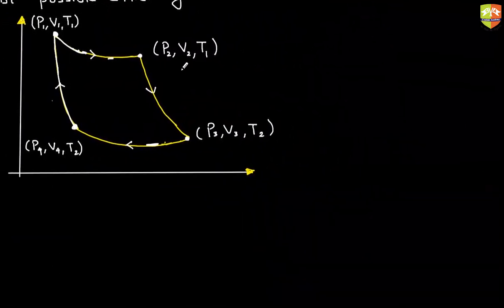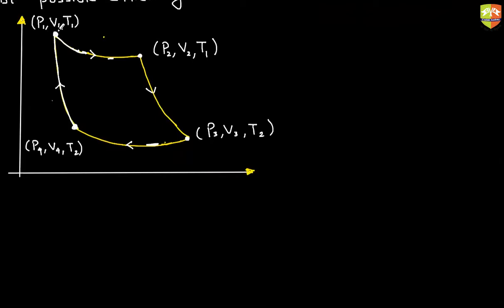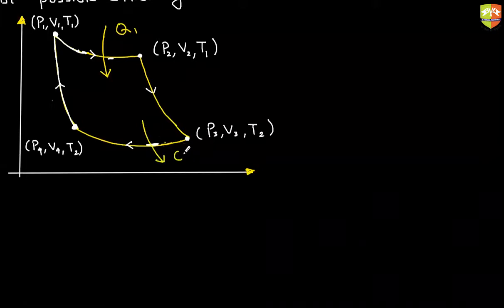Heat is exchanged at constant temperature. Which is the higher temperature — T1 or T2? T1 is higher because P times V equals NRT, so the product of pressure and volume is highest at the upper portion and lower in the lower portion. Heat is absorbed at T1, so this is Q1, and heat is released at temperature T2, so this is Q2.